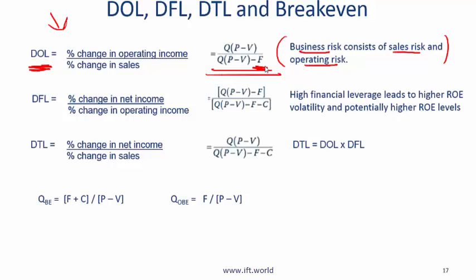With high fixed costs, the denominator becomes low. If the operating leverage is high, then a small percentage change in sales — say a 1% change in sales — will cause a relatively large percentage change in operating income.